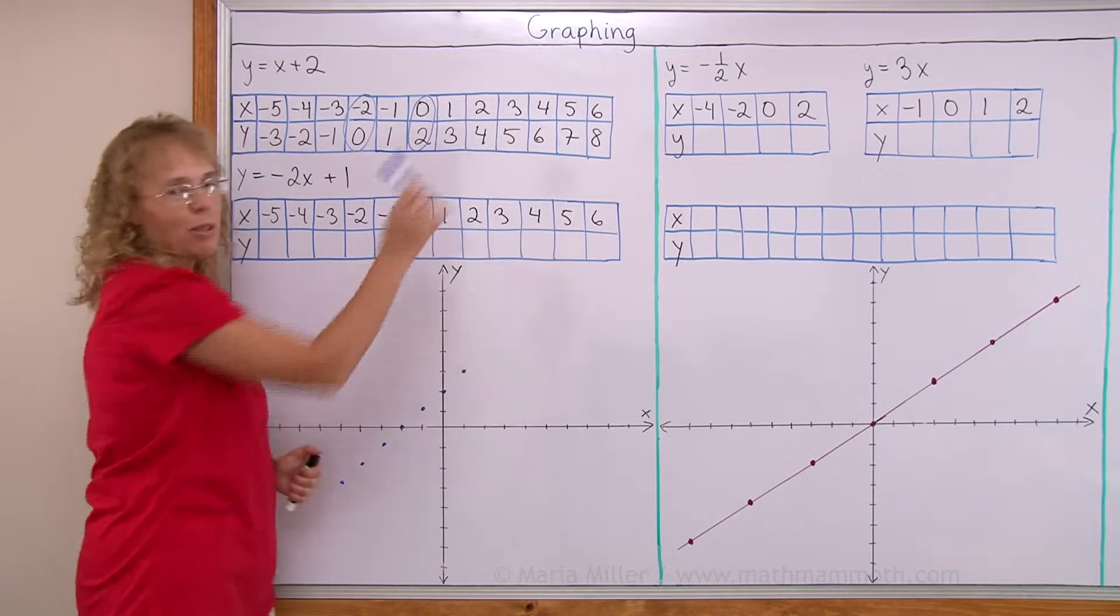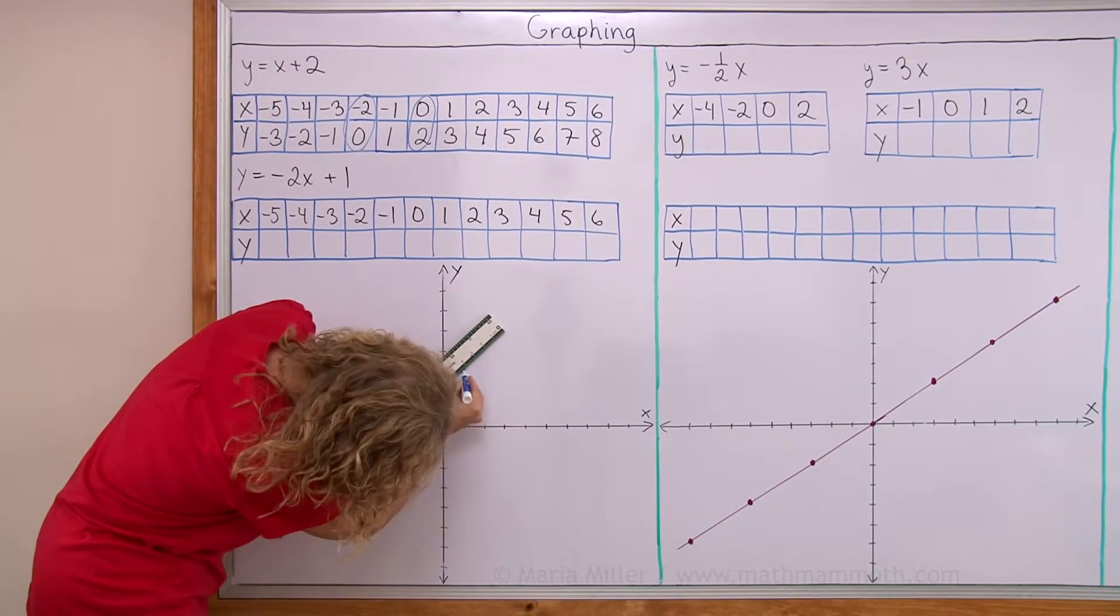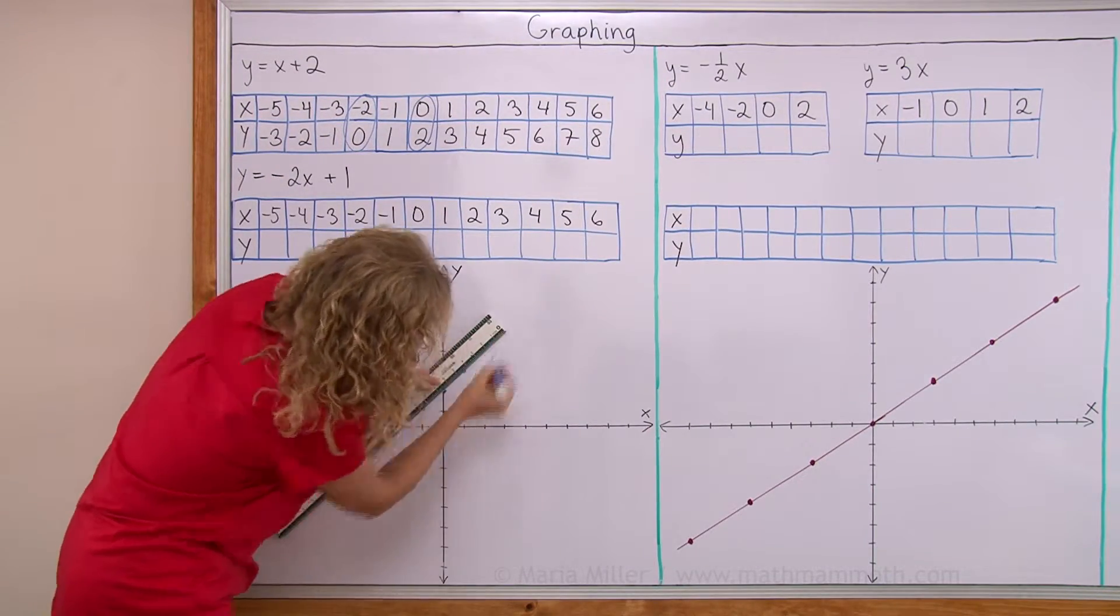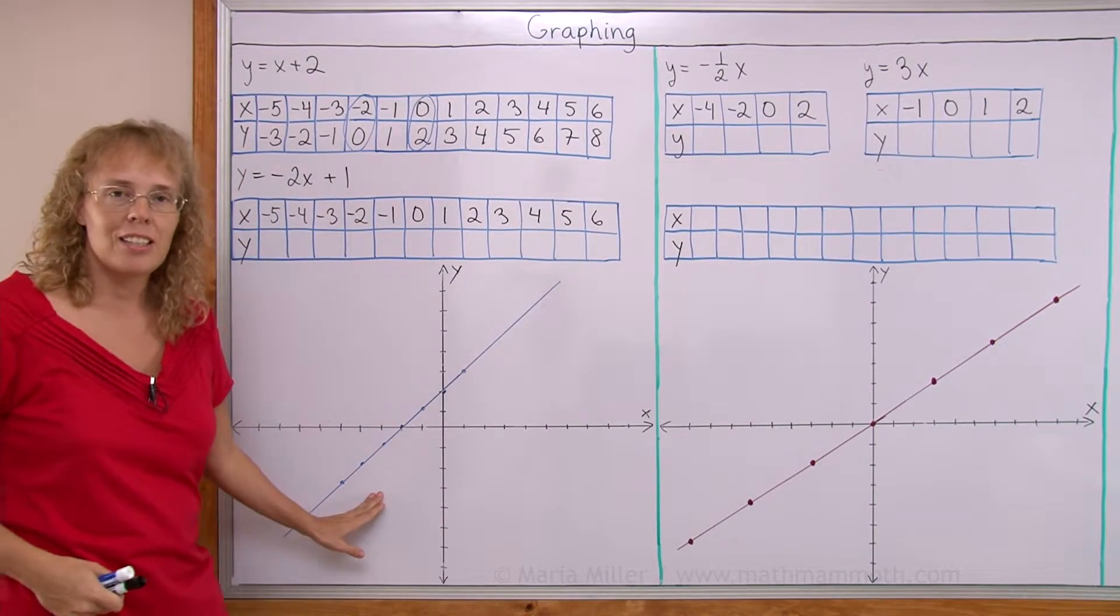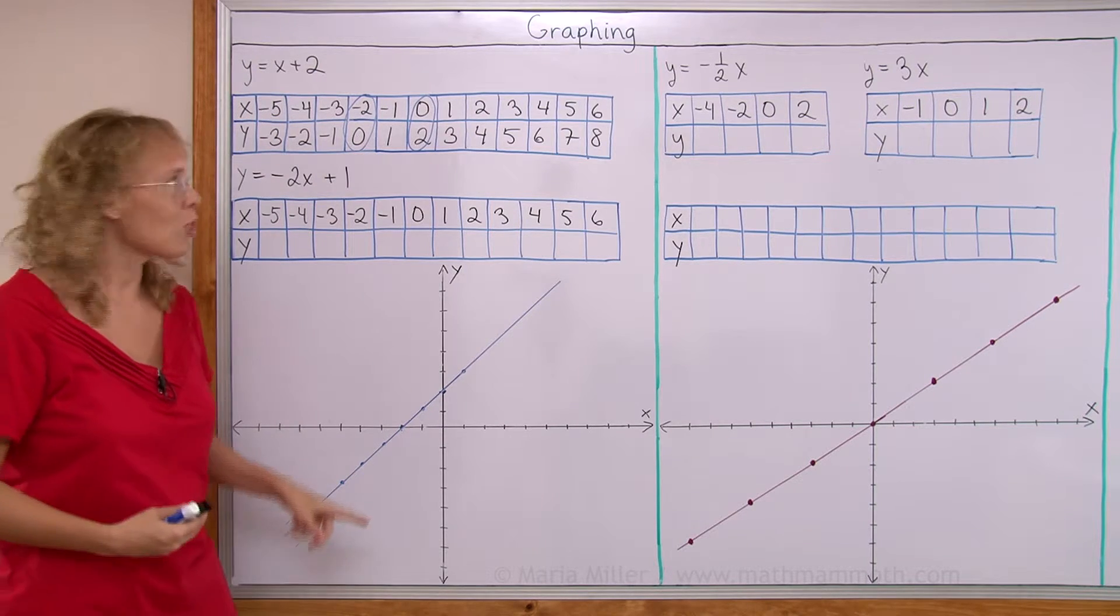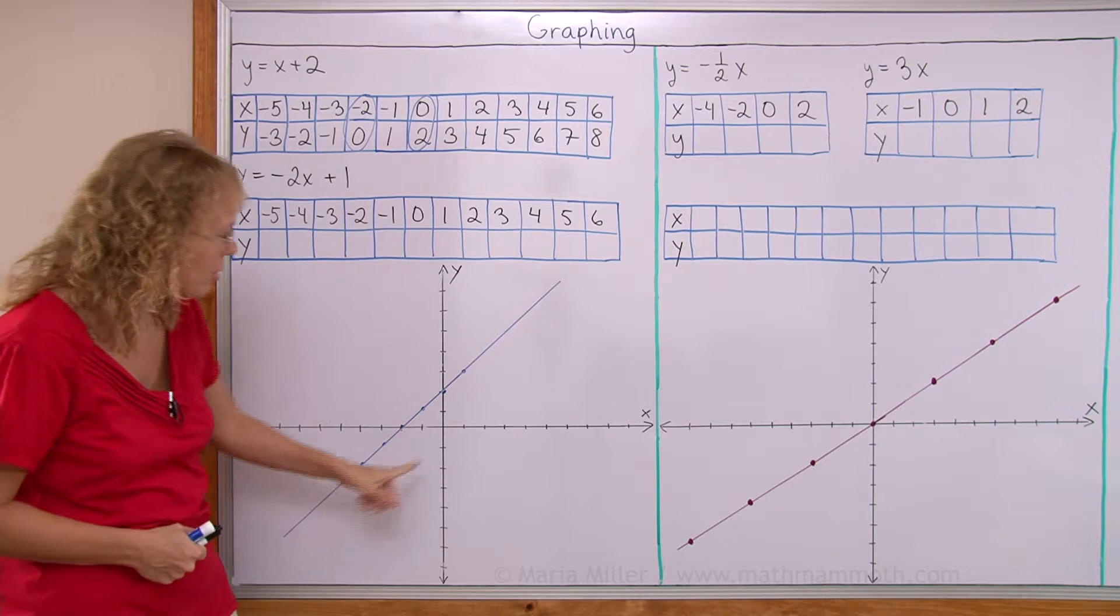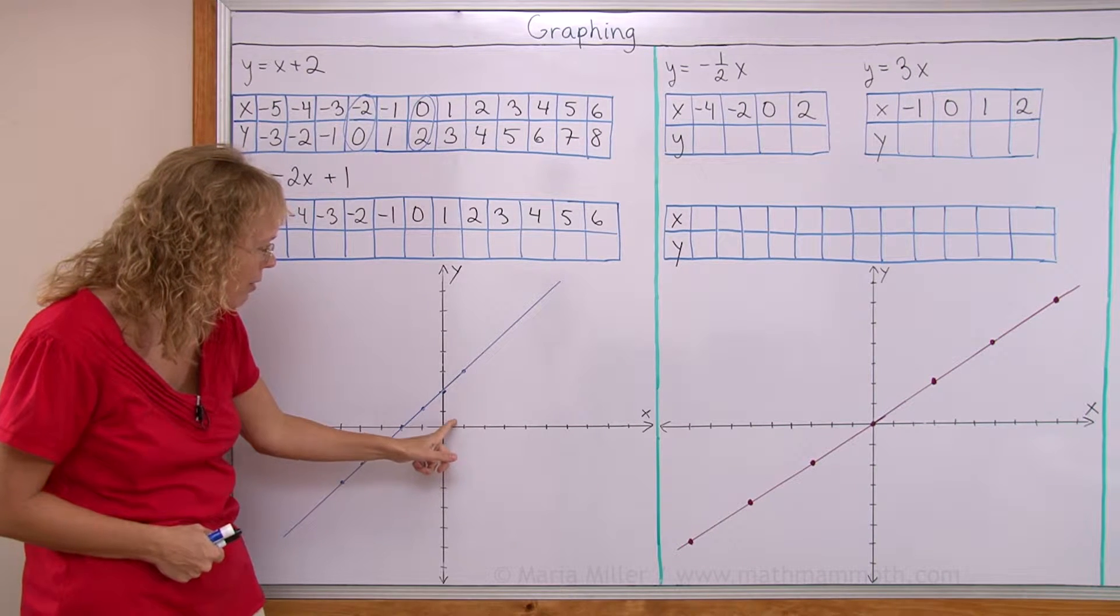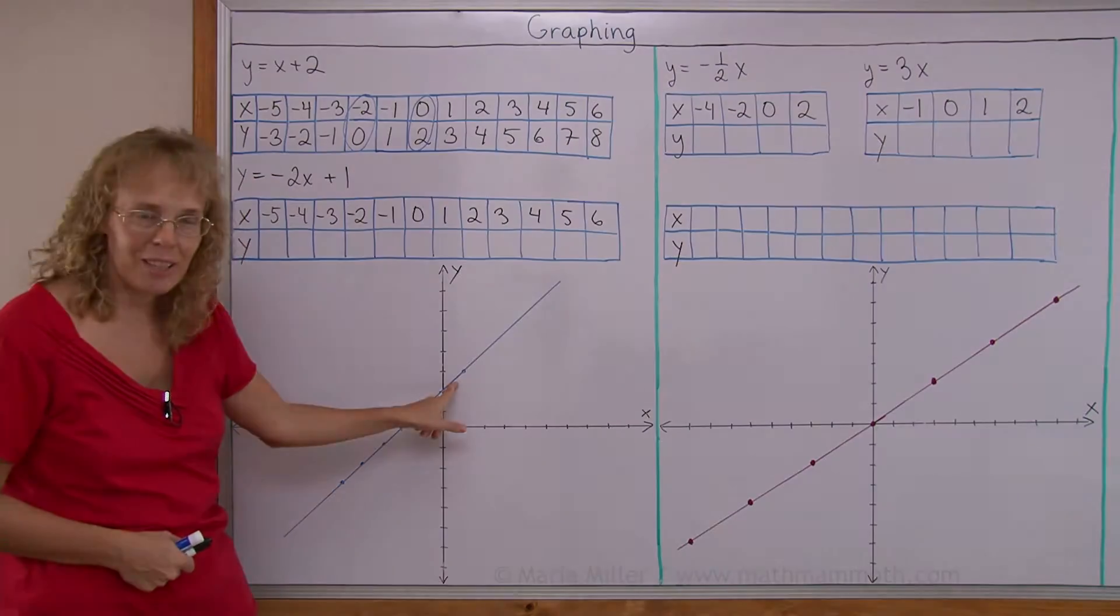There would be corresponding y values for each of those too. And so when I draw a line, I will catch them all, so to speak. Now this line is the solution set to this equation. It contains all the possible solutions to this equation, even the fractional ones. Because if x is 1 half, then there is a corresponding y value to 1 half here, this dot here on the line.